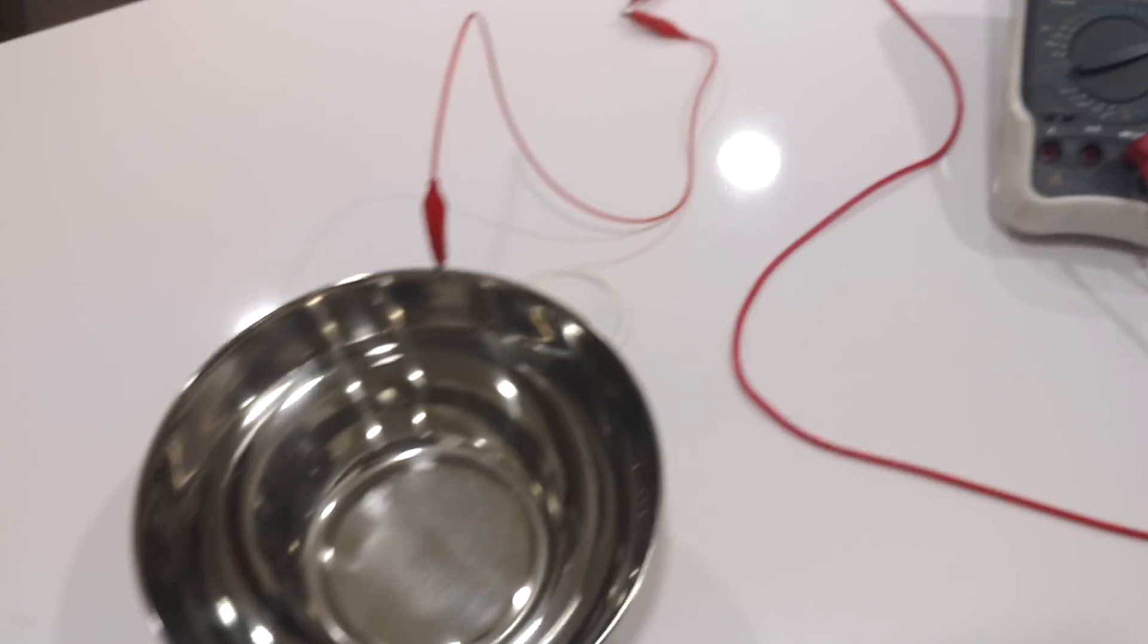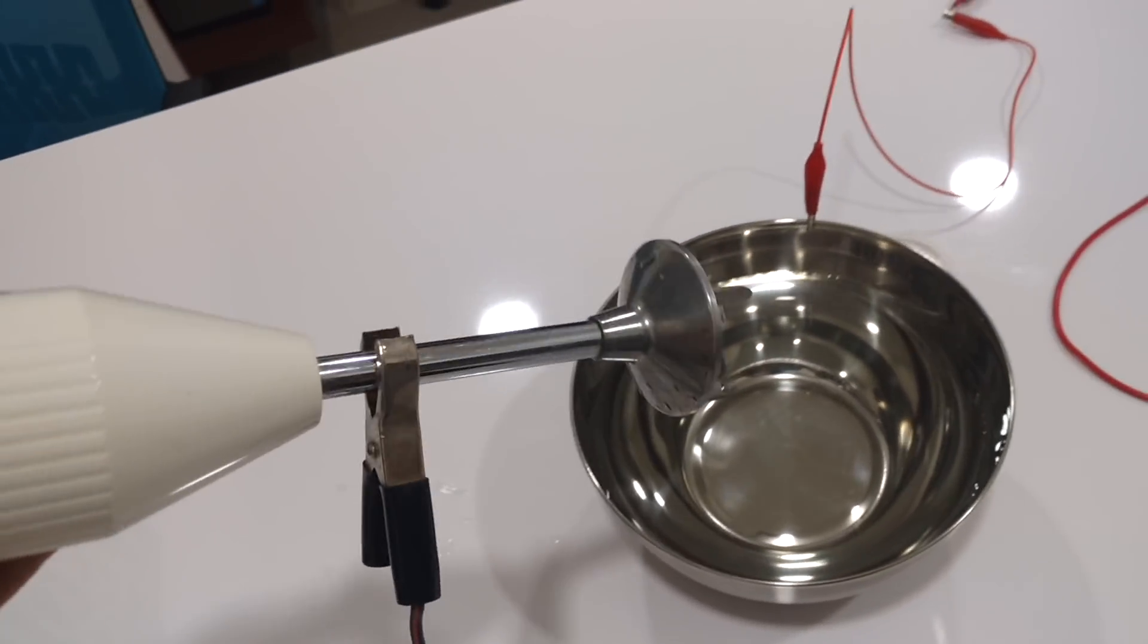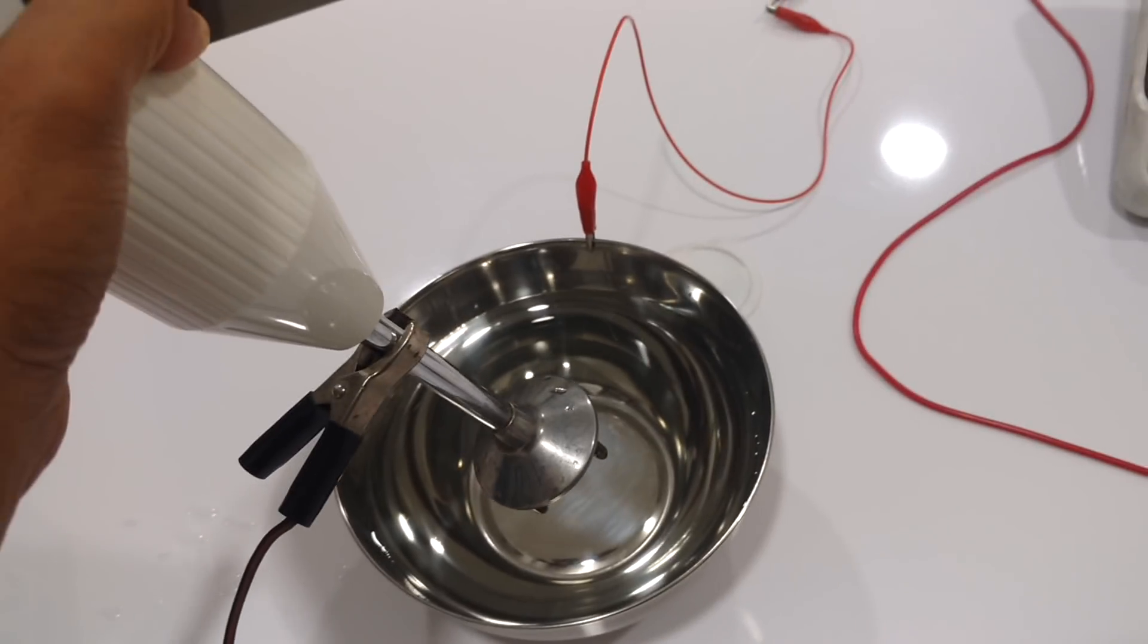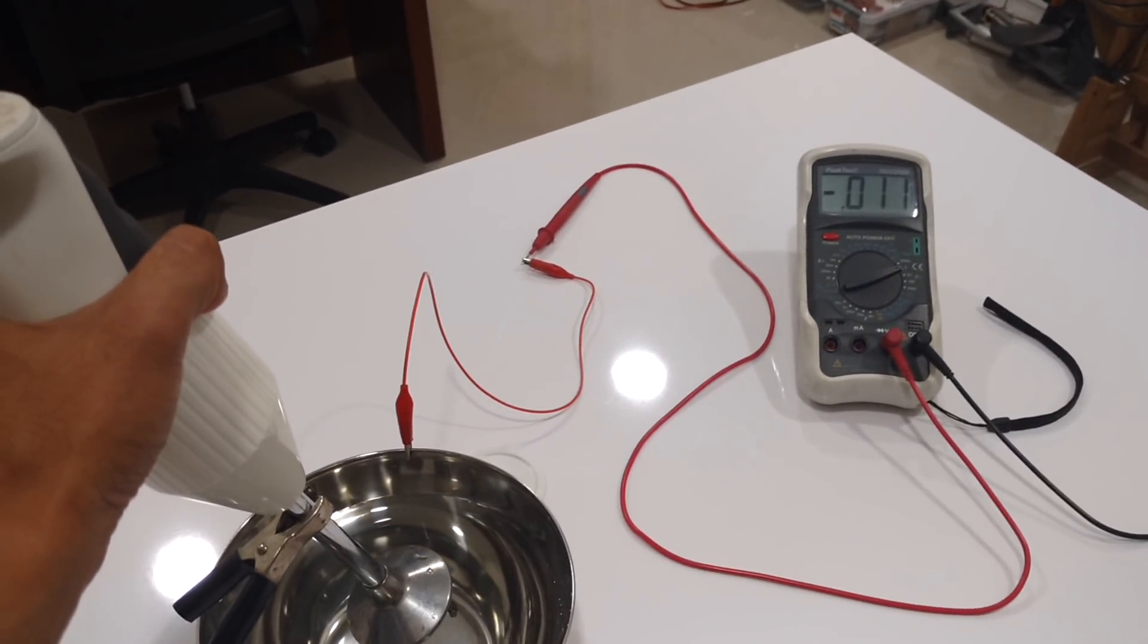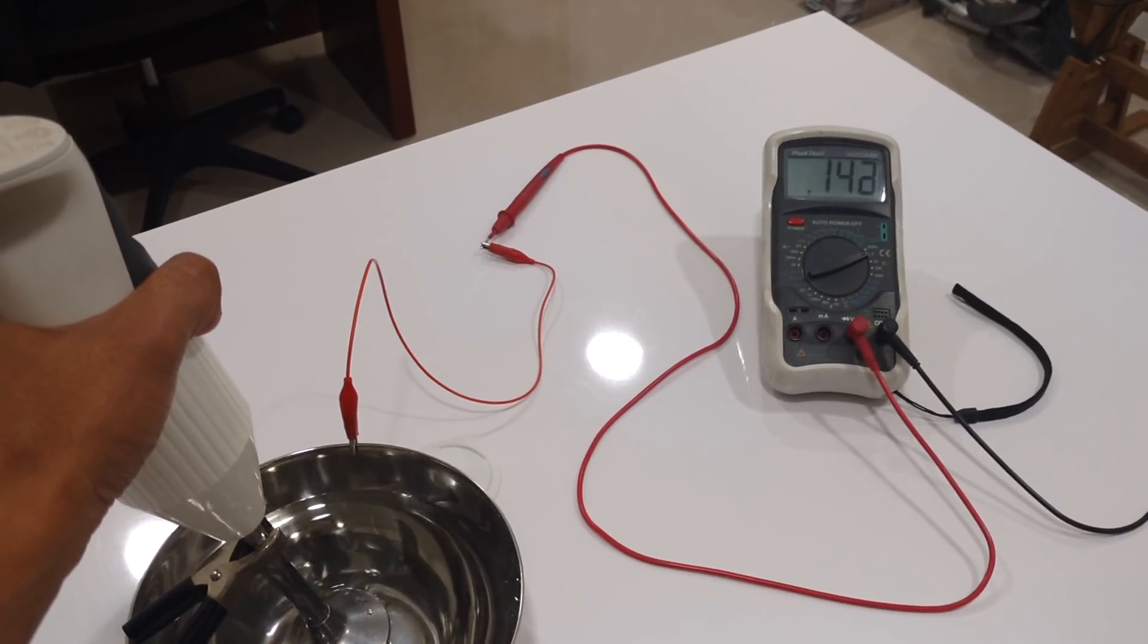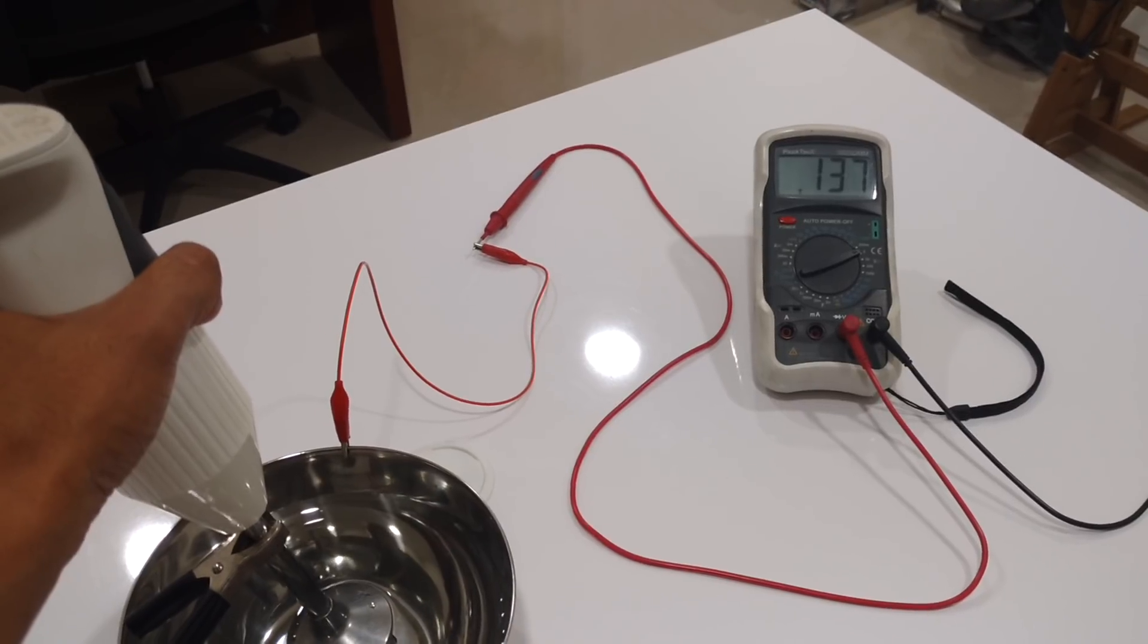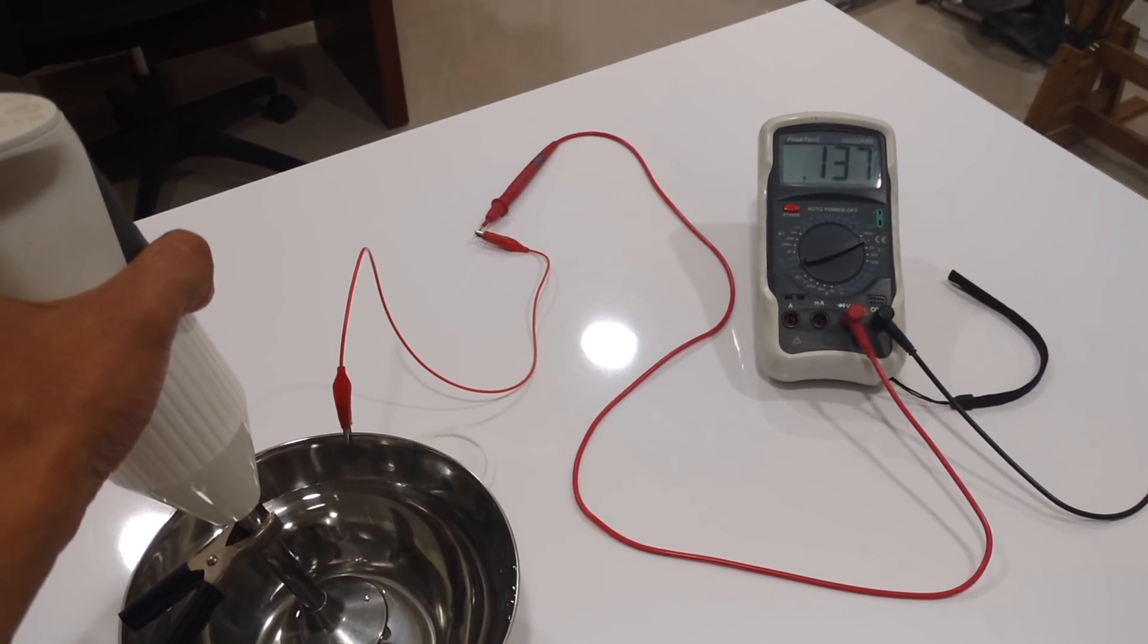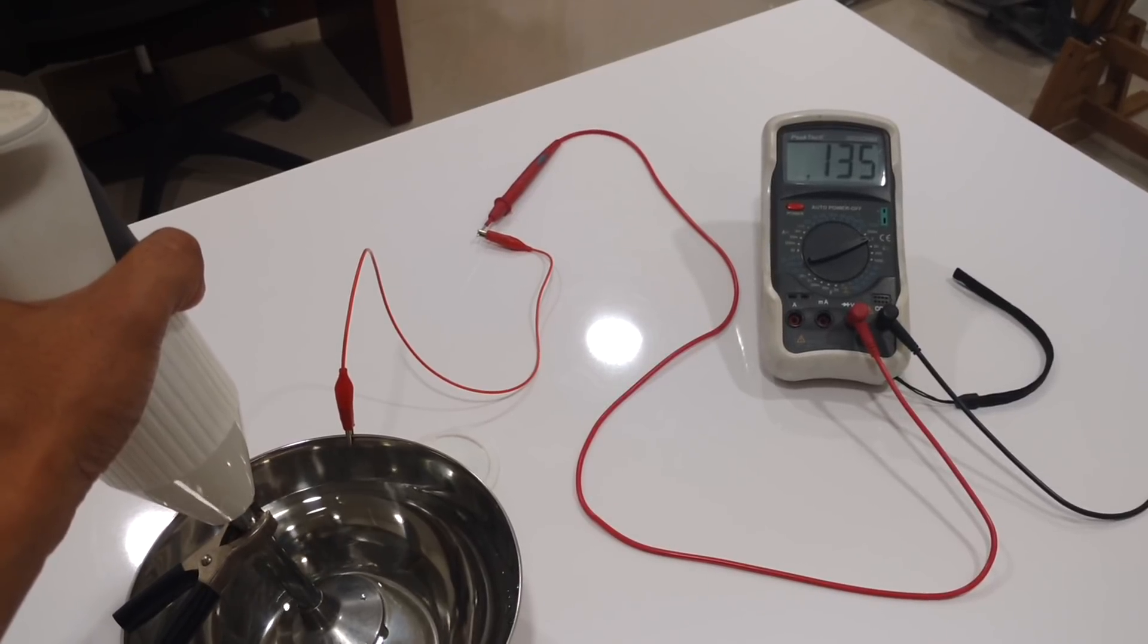Okay, now I am going to put this metal part into the water and you can see the potential. Now you see the voltage is 0.13 volts.